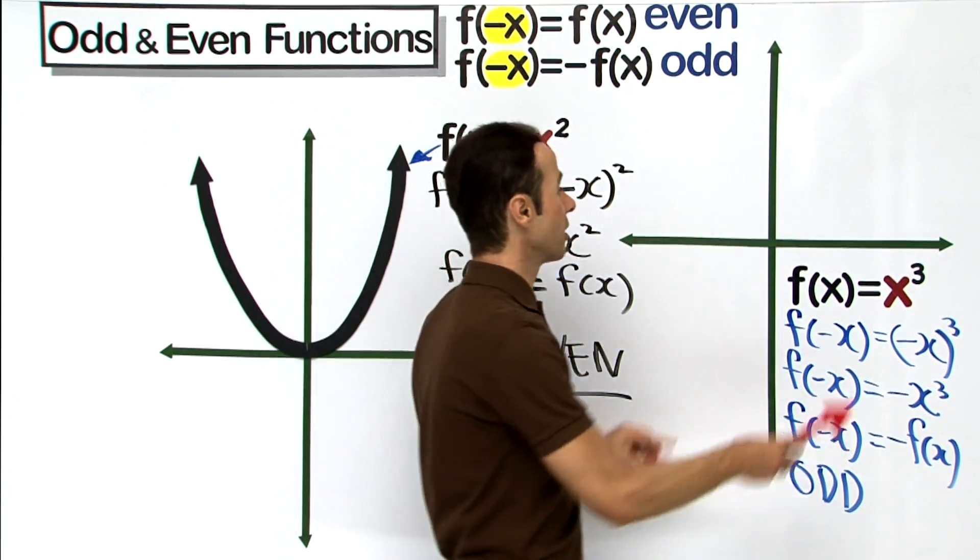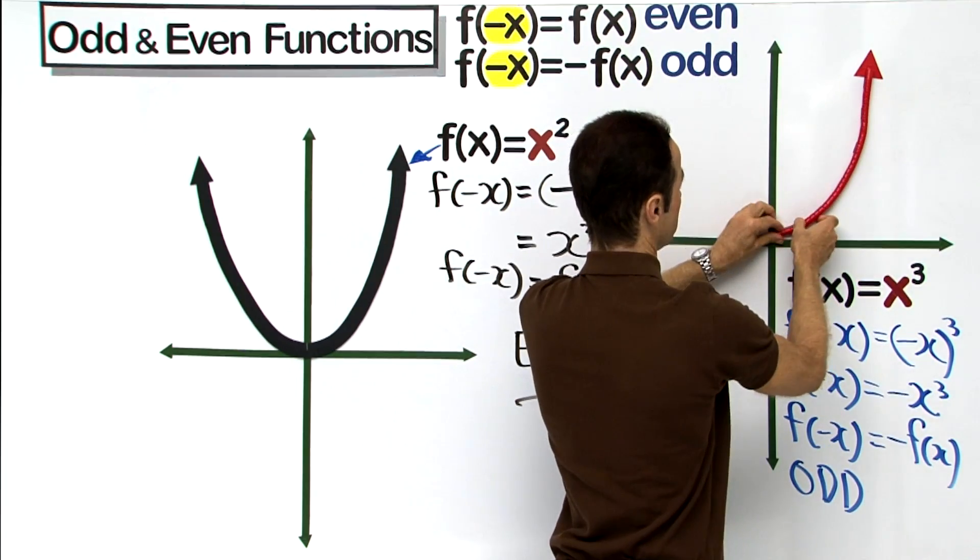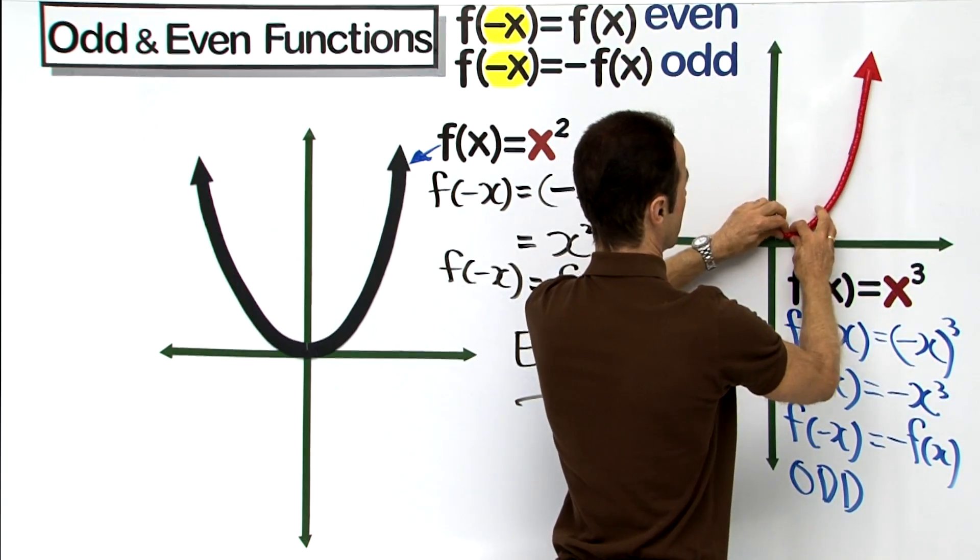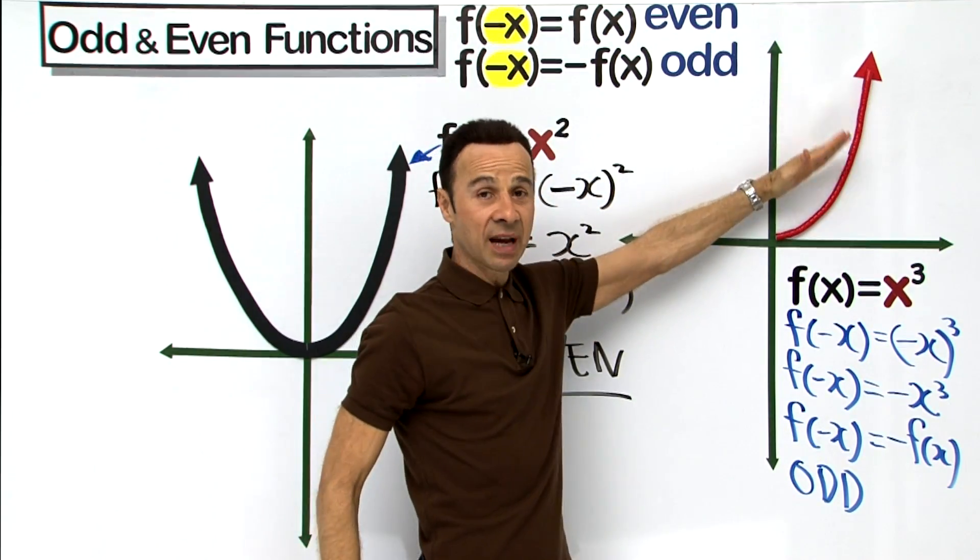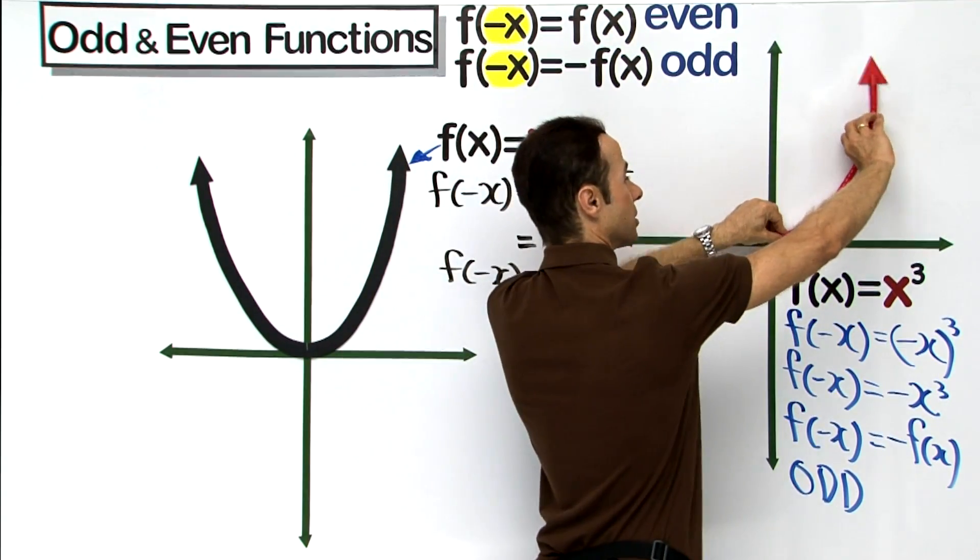it would look something like this, there we have it like that. So if we were to rotate this around this way, it would look something like this,